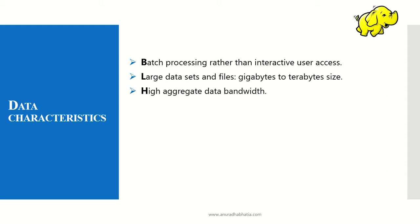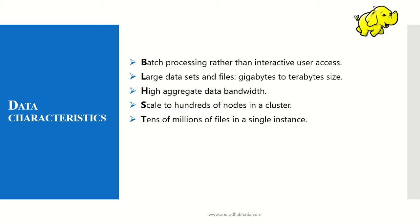High aggregate data bandwidth — it has to have low latency whenever a large amount of data is flowing, so that the delay is less. It can scale to hundreds of nodes in a cluster, meaning it can be distributed to many nodes.